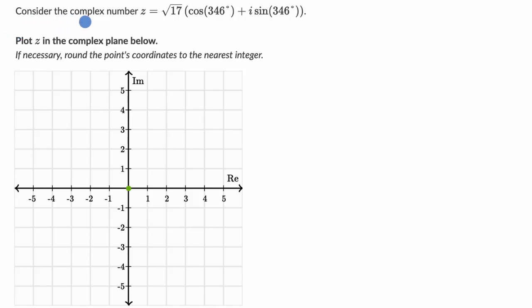We are told consider the complex number z, which is equal to the square root of 17 times cosine of 346 degrees plus i sine of 346 degrees. And they ask us to plot z in the complex plane below. If necessary, round the point's coordinates to the nearest integer.